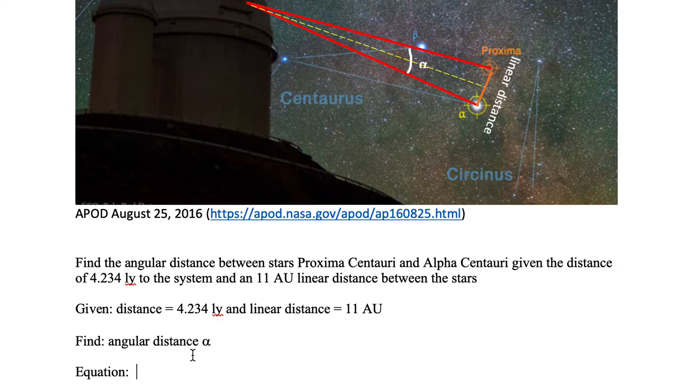Since we are finding the angular distance Alpha and the question does not specify whether it's degrees, arc minutes, or arc seconds, we can choose any of the three equations in this chapter. Because the distance looks pretty good, meaning we see a wide separation, we're going to use the degree calculation, Equation 1c.